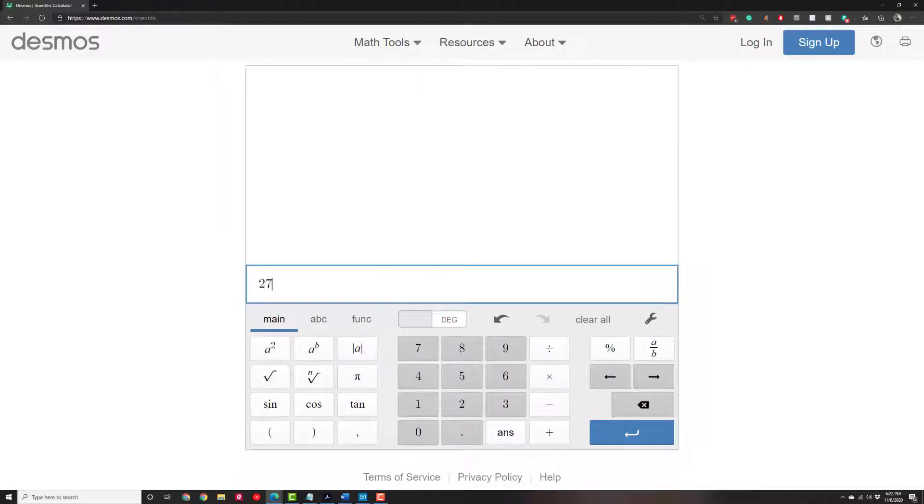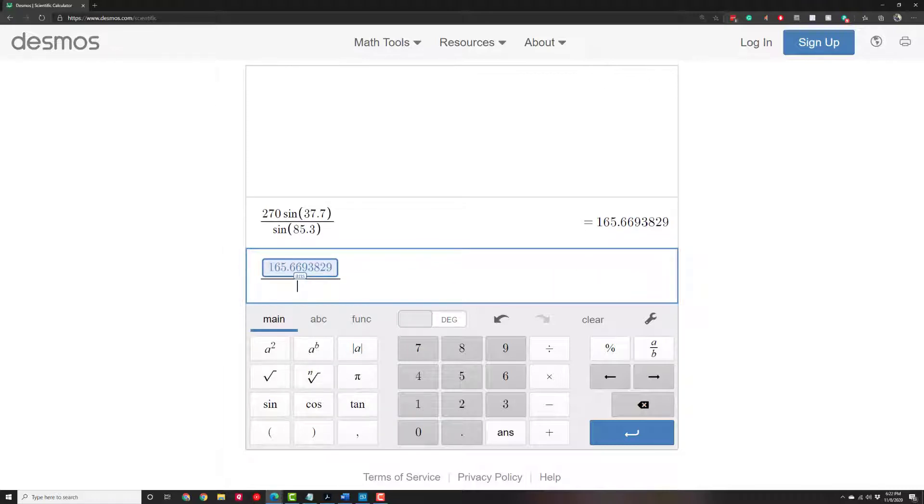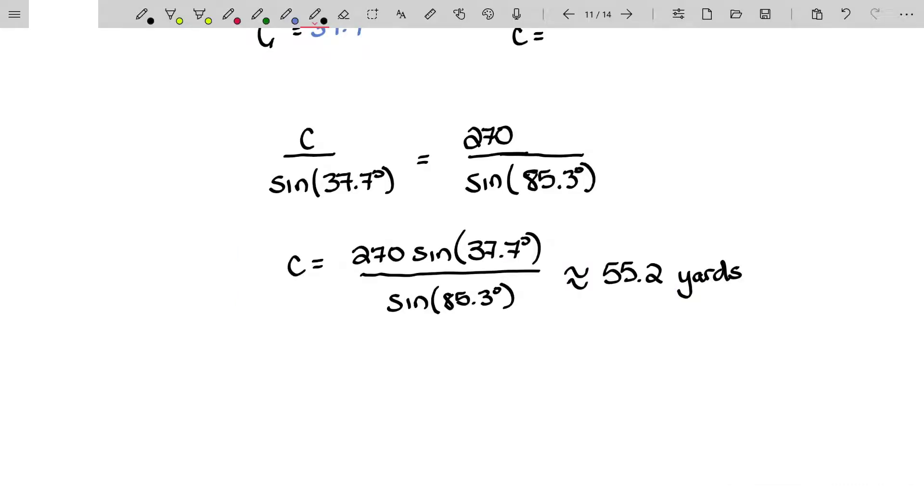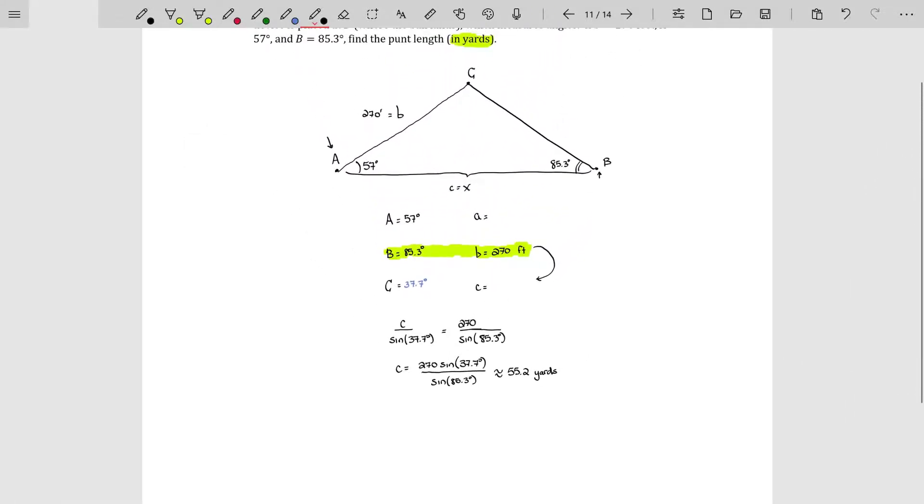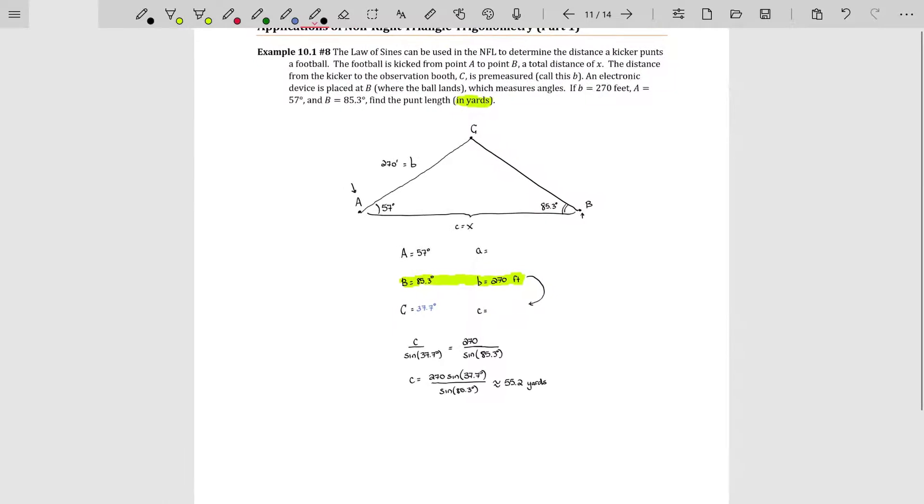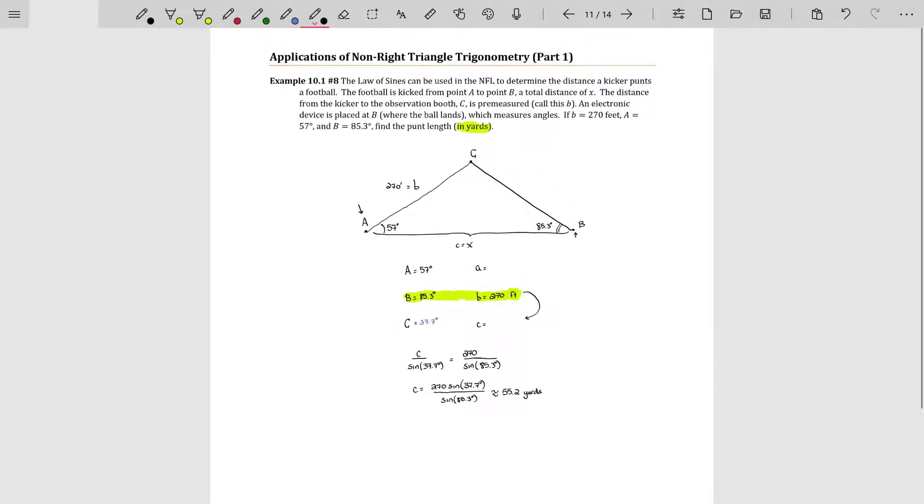So here we are, 270 sine of 37.7 degrees, and divide that by sine of 85.3 degrees. That's how many feet it is. And I'm going to take that answer and divide it by three. And I get 55.2 yards. We have the answer. 55.2 yards is how far the football was kicked. That was the length of the punt.